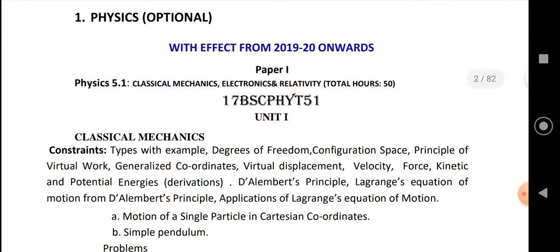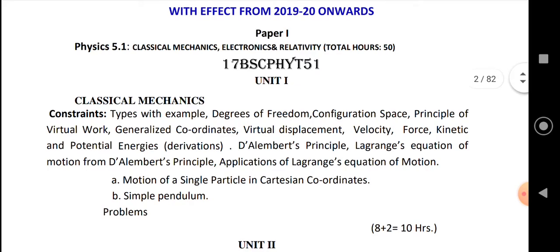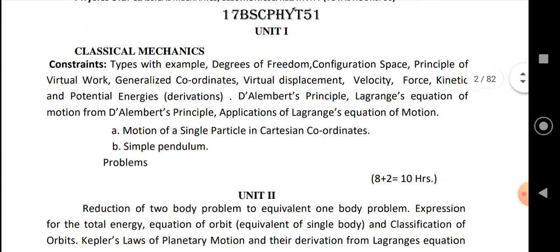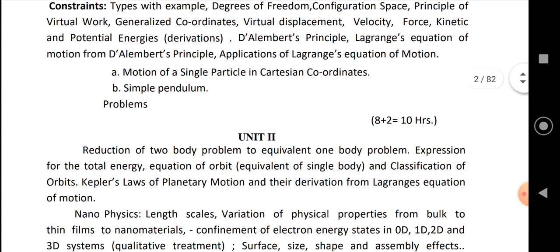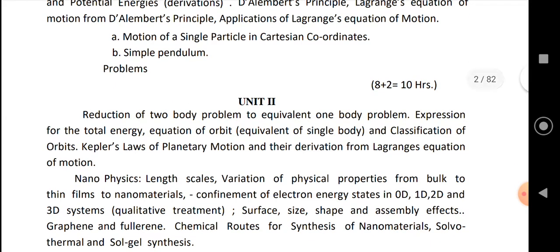There are five units in paper one. In the first unit there is classical mechanics, which is mainly focused on D'Alembert's principle, Lagrangian equation of motion, and the application of Lagrangian equation of motion. The second unit is also related to classical mechanics as a continued part.